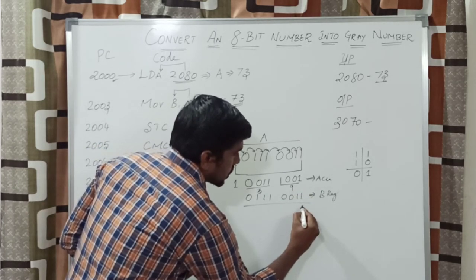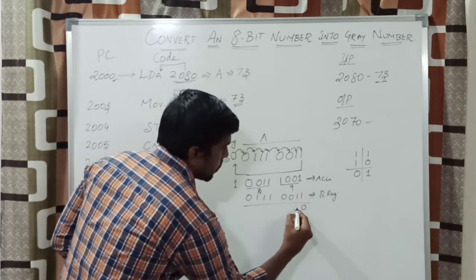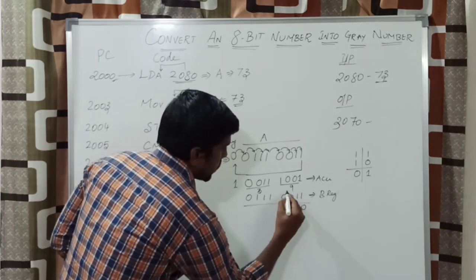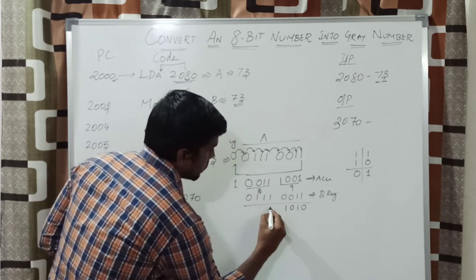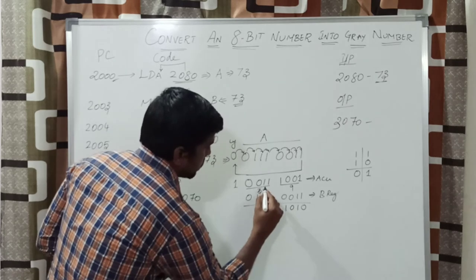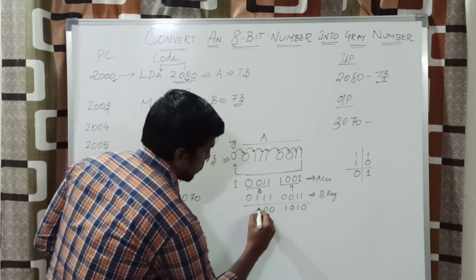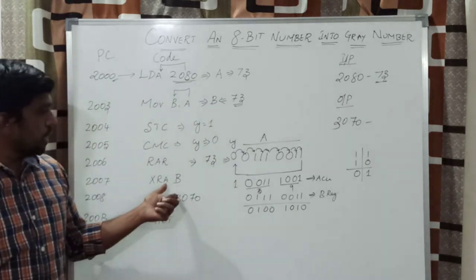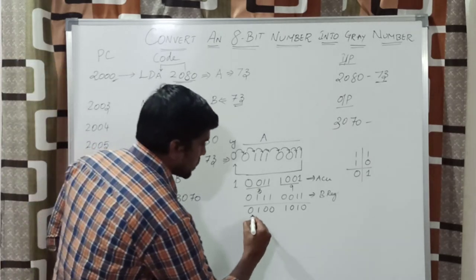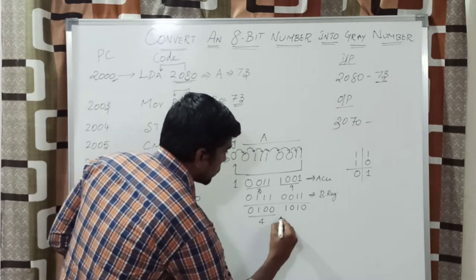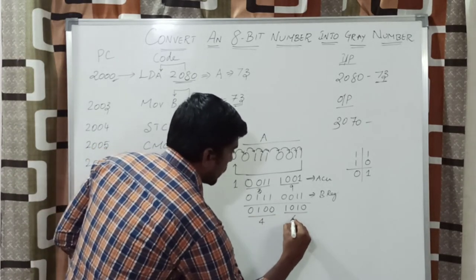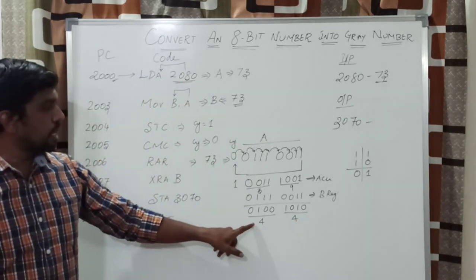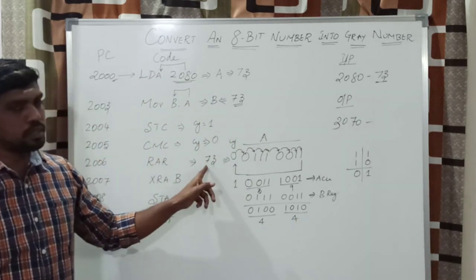Applying this property to the values: 1 XOR 1 — both are the same value, result is 0; then 0, 1 gives 1; 1, 0 gives 1; 0, 0 gives 0; 1, 1 gives 0; 0, 0 gives 0; 0, 1 gives 1; 1, 0 gives 1. After taking the XOR operation, you get the result 4A. This 4A is the equivalent Grey code number for 73.